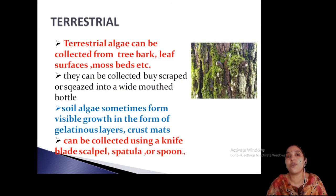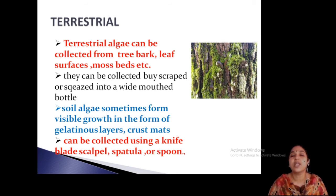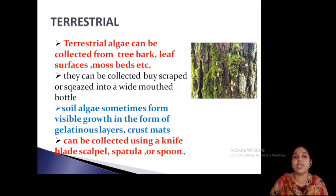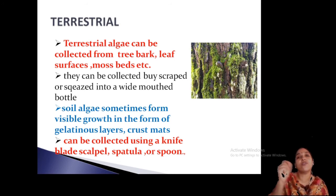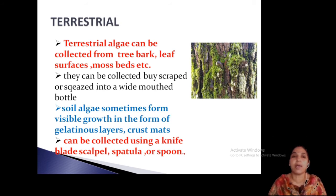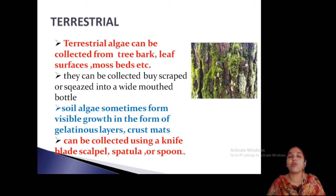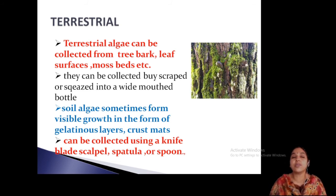The terrestrial form is the next one. Terrestrial algae are usually attached on tree barks. You can collect them by scraping from the bark surface and transferring into a wide-mouthed bottle. Soil algae are also a terrestrial form and are present as crust matter. These can also be taken out by spatula and dissolved. You can collect them using a knife, blade, spatula, or spore.